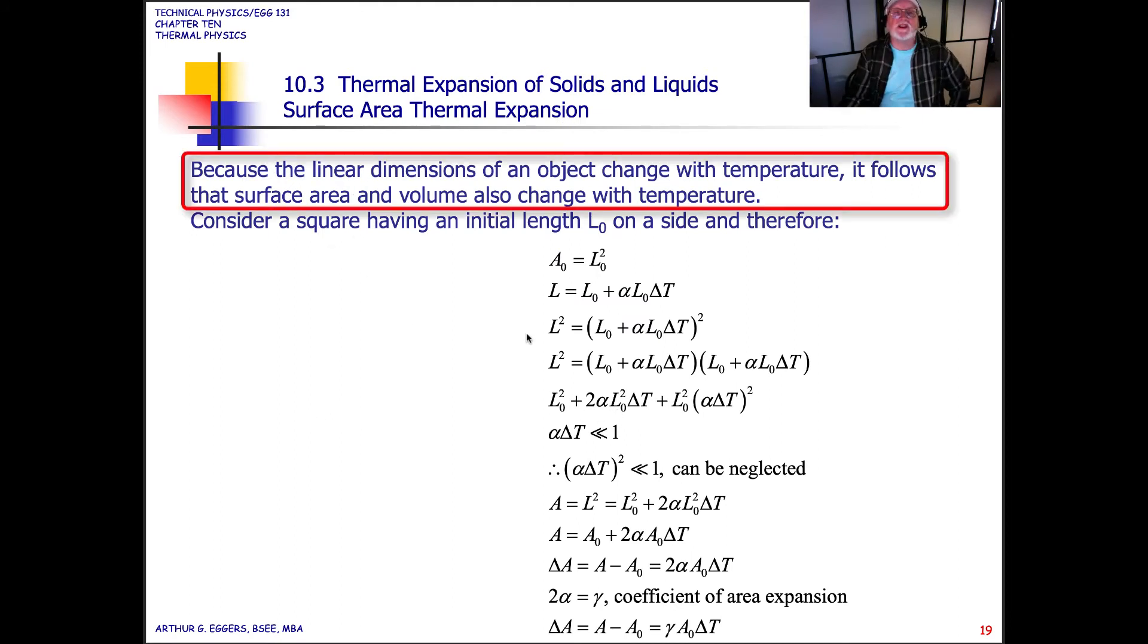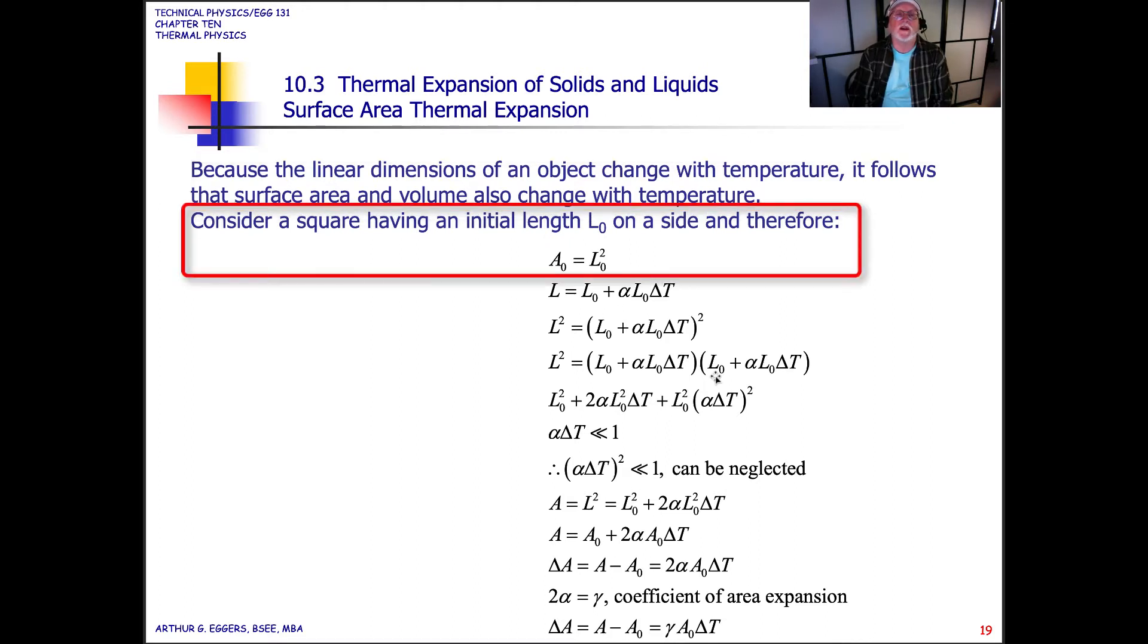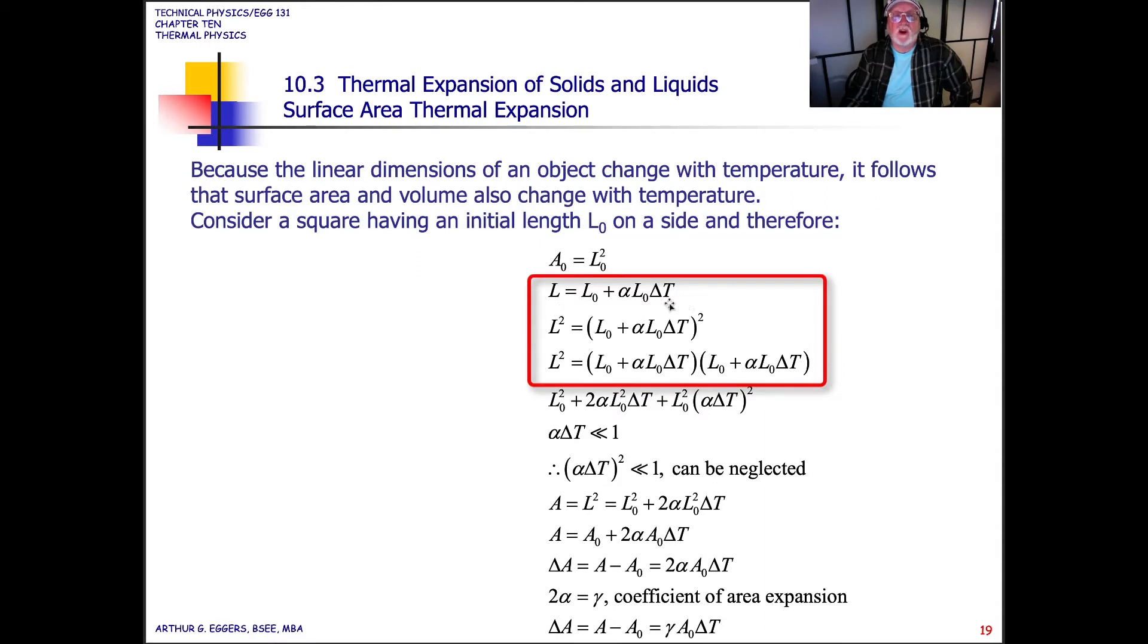So because the linear dimensions of an object change with temperature, it follows that the surface area and the volume also change with temperature. If we consider a square having an initial length of L initial or L-naught on a side, we can run this through the relationships that says, if we have a surface area A-naught, which is equal to length times width or L-squared-naught, then we can insert these values into our relationships to come up with an area and length relationship. So the definition says that L, the length, is equal to L-naught plus alpha L-naught delta T. And then for L-squared, we just square both sides of the equation and come up with L-squared equal to these two terms times themselves.